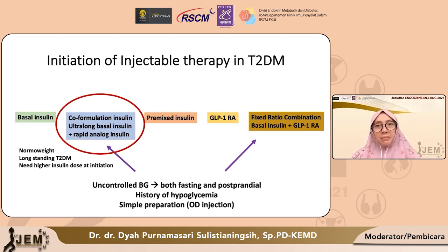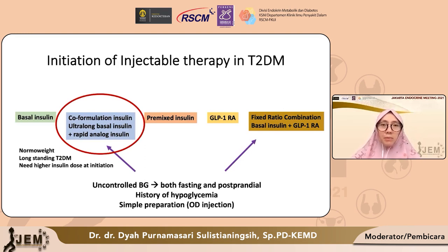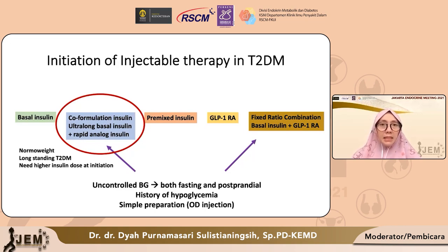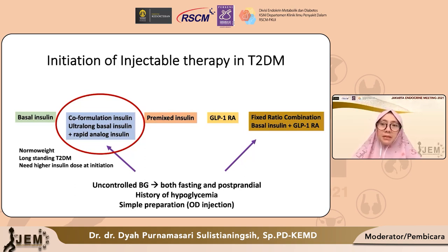Banyak faktor yang perlu kita pertimbangkan untuk memilih di antara dua jenis ini. Pada pasien ini akhirnya kita pilih insulin co-formulation dengan pertimbangan dia normal weight dan sudah cukup lama menderita diabetes, sehingga kemungkinan insulin defisiensinya juga cukup berat, dan mungkin pasien ini memerlukan dosis inisial insulin yang lebih tinggi di awal. Sedangkan kalau kita menggunakan fixed ratio combination, kita harus berhati-hati menggunakan dosis permulaan yang relatif tinggi, karena harus memulainya pelan-pelan untuk mentoleransi efek saluran cerna dari GLP-1 reseptor agonis.